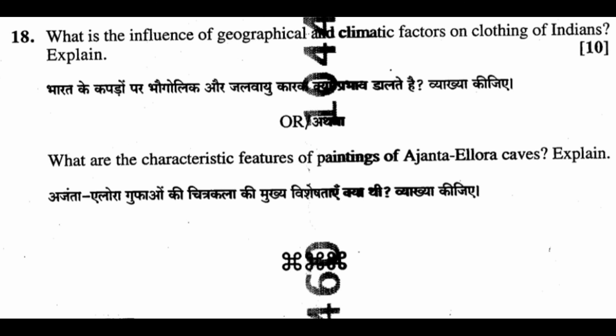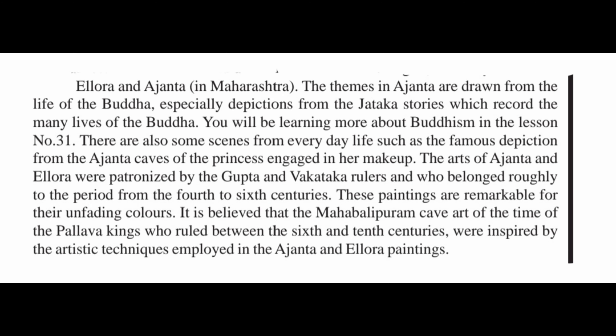Question 18 (alternate): What are the characteristic features of the paintings of Ajanta and Ellora Caves? The themes in Ajanta are drawn from the life of Buddha, especially depictions from the Jataka stories, which record the many lives of the Buddha. There are also some scenes from everyday life, such as the famous depiction from the Ajanta cave of a princess engaged in her makeup. The art of Ajanta and Ellora was patronized by the Gupta and Vakataka rulers, belonging roughly to the period from the 4th to 6th century. These paintings are remarkable for their unfading color. It is believed that the Mahabalipuram cave art of the Pallava kings, who ruled between the 6th and 10th centuries, was inspired by the artistic techniques employed in the Ajanta and Ellora paintings.